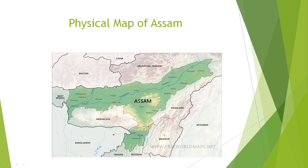A physical map displays rivers, oceans, plains, and mountains.